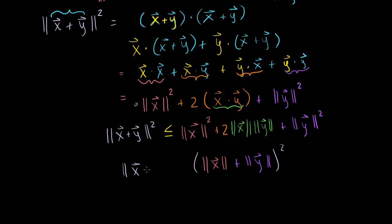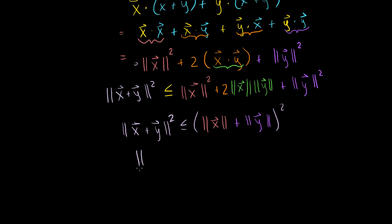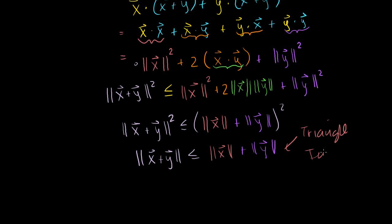If we just take the square root of both sides, we get the length of vector x plus y is less than or equal to the length of vector x by itself plus the length of vector y. We call this the triangle inequality, which you might have remembered from geometry.